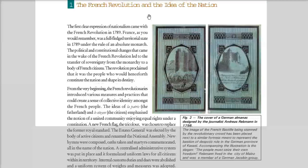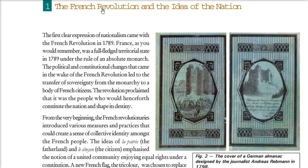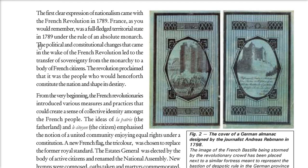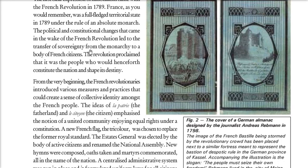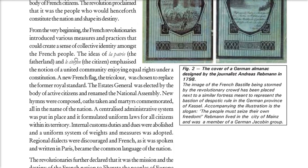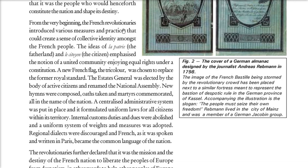We have to go back to French Revolution history. The French Revolution and the idea of nation — the first clear expression of nationalism came in the French Revolution in 1789. In 1789, France was under the rule of an absolute monarch. Under the wake of the French Revolution, the transfer of sovereignty from monarchy to the citizens took place, shaping the destiny of the nation. The French revolutionaries introduced certain measures and practices to create a sense of collective identity among the French people.